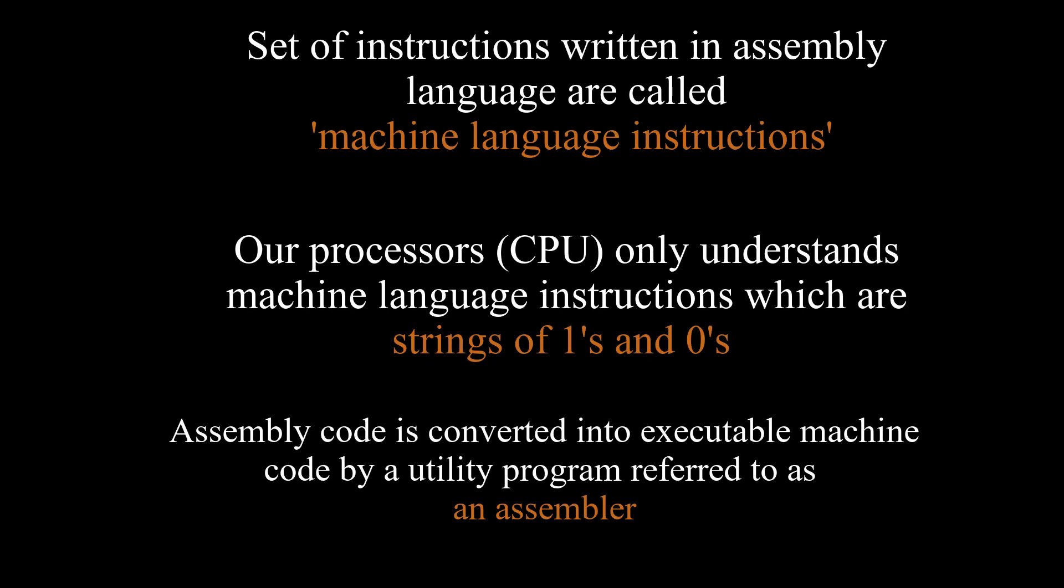The set of instructions written in assembly language are called machine language instructions. Our CPUs only understand machine language instructions, which are streams of ones and zeros. Since machine language is too complex to be efficiently used in software development, the low-level assembly language is designed for a specific family of processors that represents various instructions in a more understandable form.